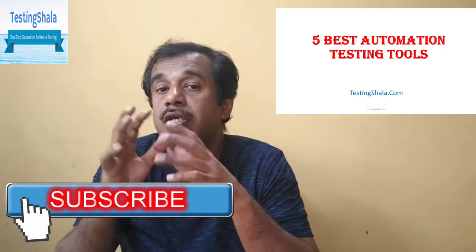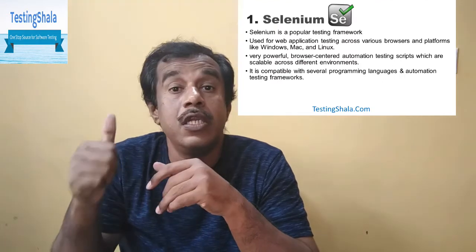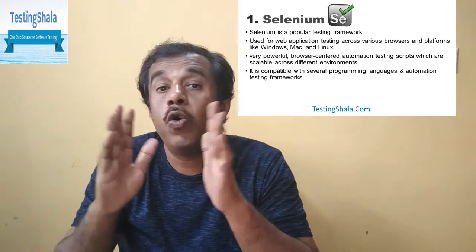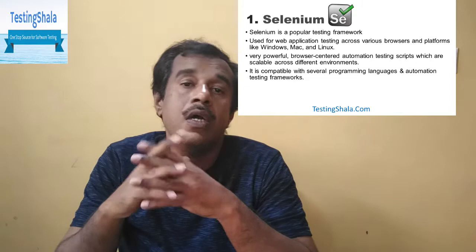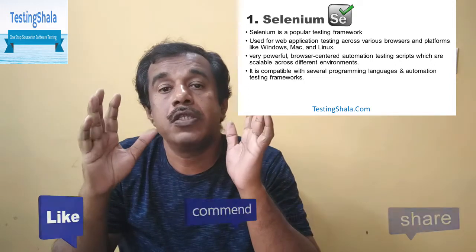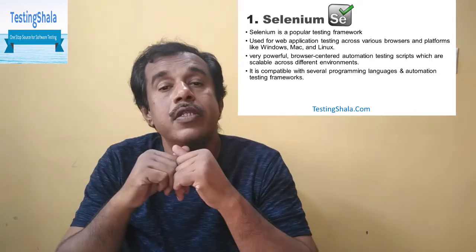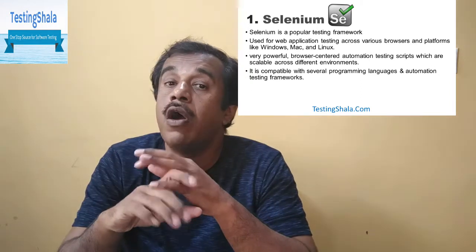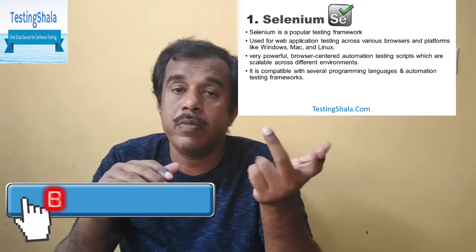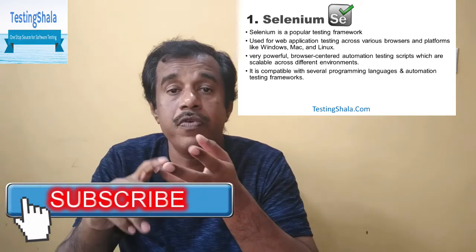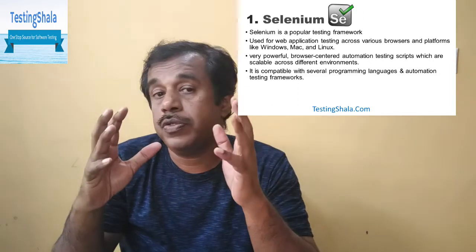The first best automation tool is Selenium. Selenium is one of the best open source automation tools. Selenium is used mainly on web-based applications because it supports automating across browsers. It supports almost all browsers across all platforms — iOS, Windows, Linux — and browsers including Google Chrome, Internet Explorer, Firefox, and so on. Hence Selenium is one of the best tools to perform automation on web applications.